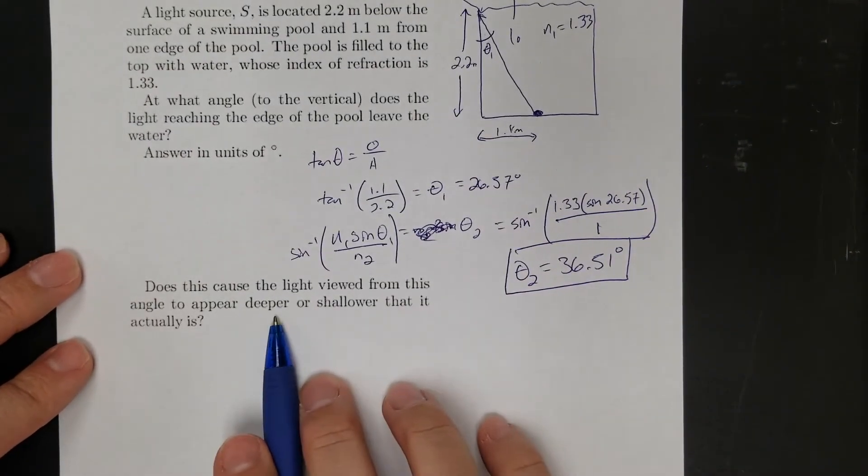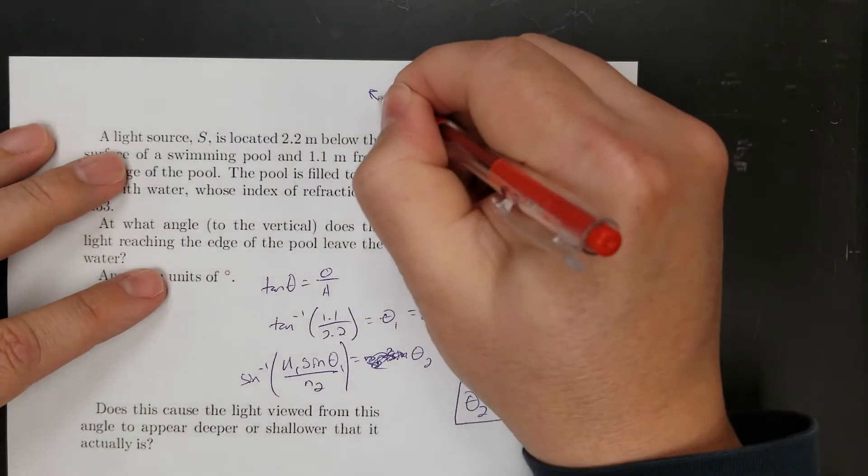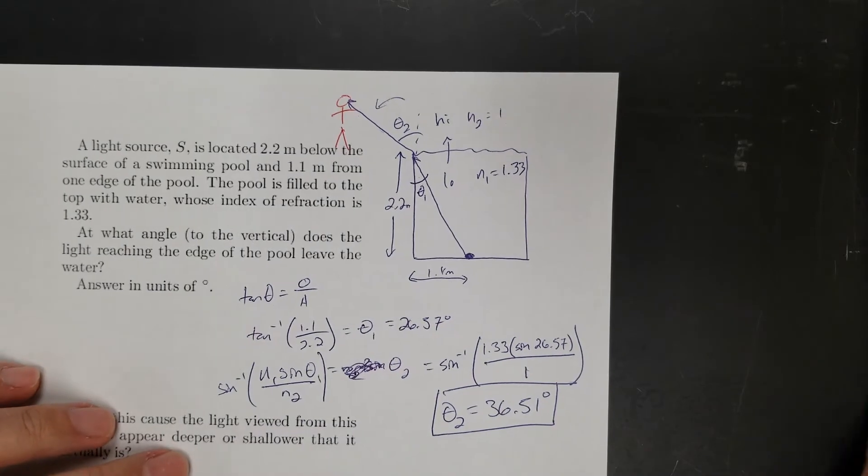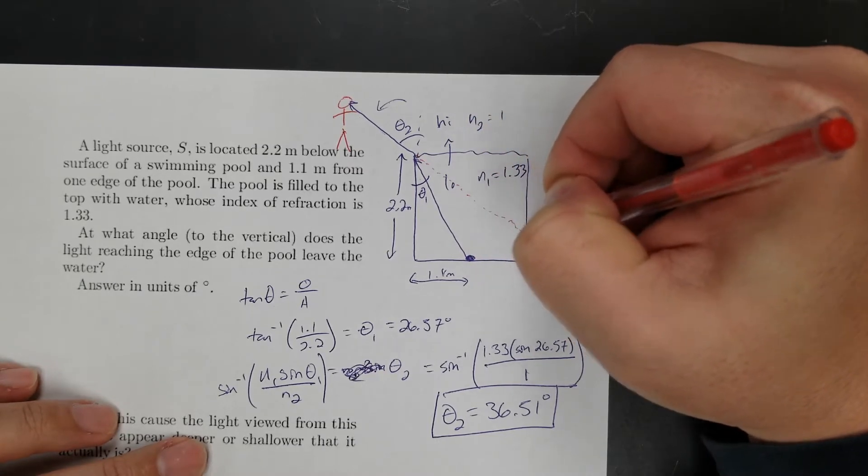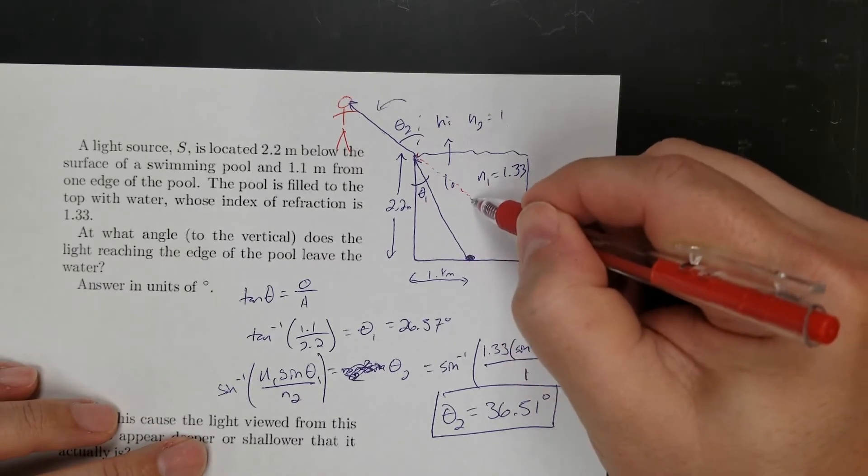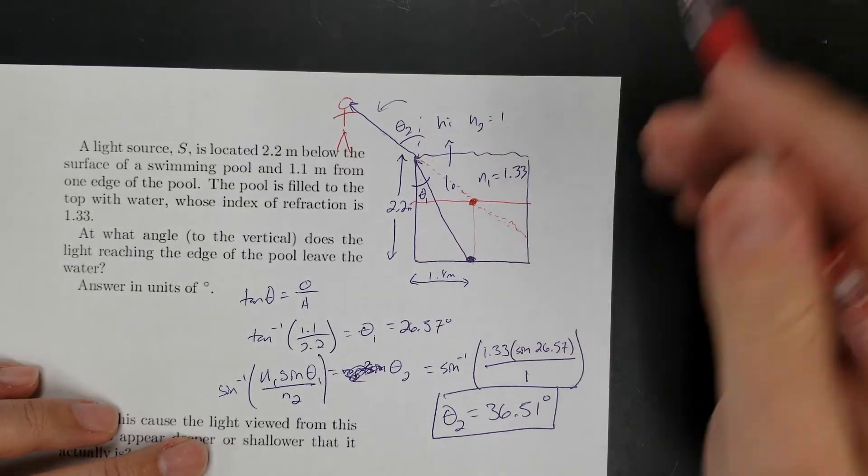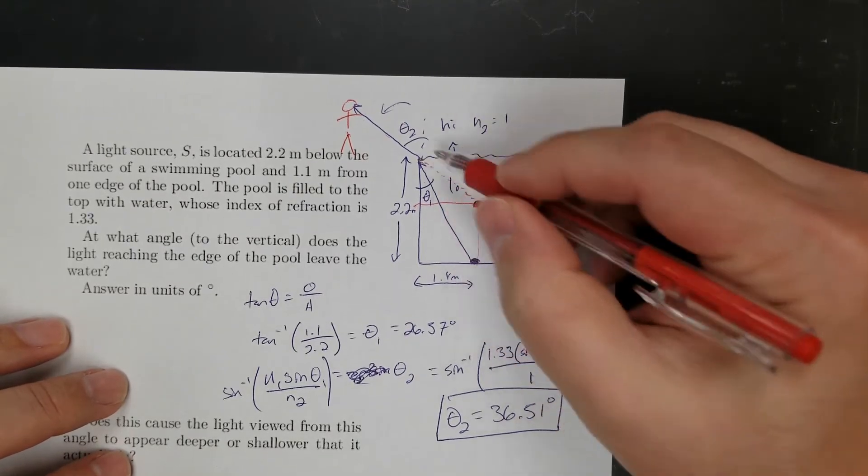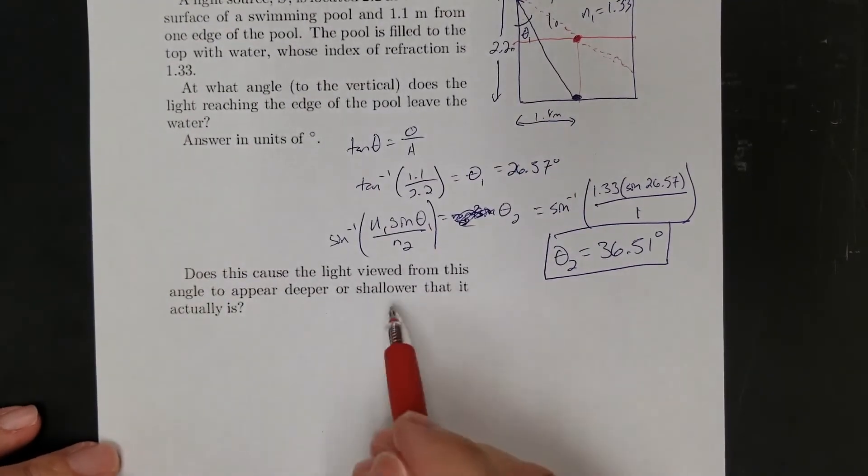So does this cause the light viewed from this angle to appear deeper or shallower? Oh, that's a good conceptual question. So let's think about if you were standing right here, like there's your face, and that light is hitting you in the face. Where do you see that light coming from? So this ray is what you see, but your brain doesn't know that that light bent. So this is the path you think that light came from. And so if you see, here's the object. To you, it's going to look like the object is right there, at this level here. Have you ever noticed when you look on top of something with water in it, it looks shallower if you look straight down? This is why, because the light is bending when it goes in, so your brain thinks it's coming from here. That makes it seem like it's shallower. So this answer would be shallower.